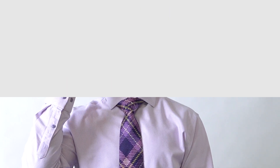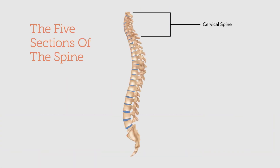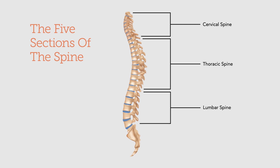There are actually five sections of the spine. The top being the cervical spine, which is connected to the skull, and then the middle section where your ribs are is the thoracic spine. Typically what we refer to as our low back is the lumbar area, and then below that is the sacrum and then the tailbone, what we call the coccyx.